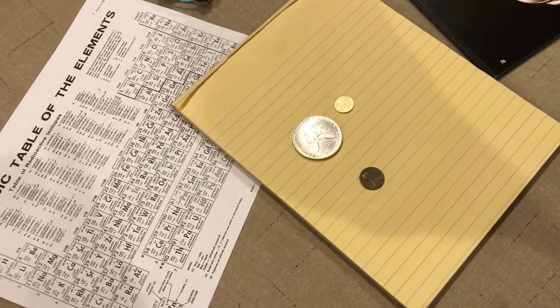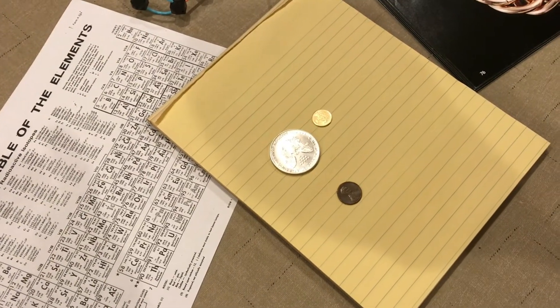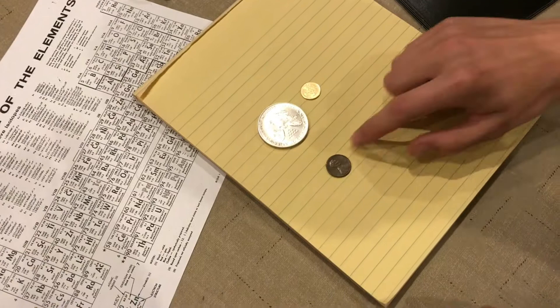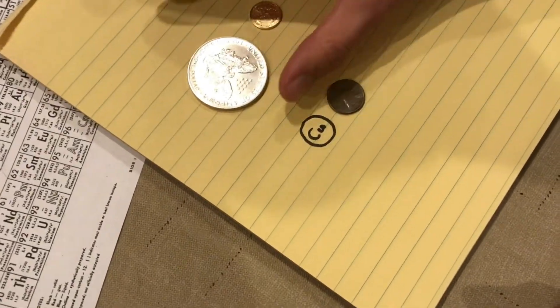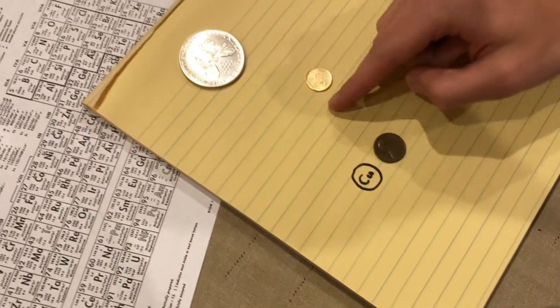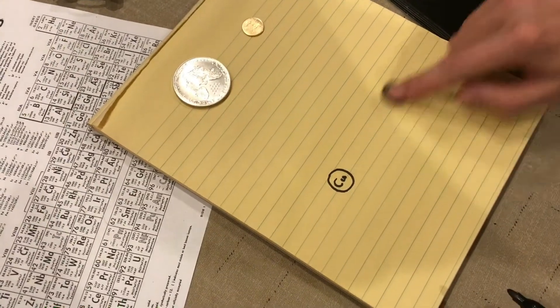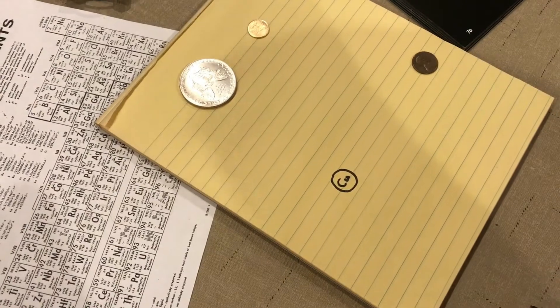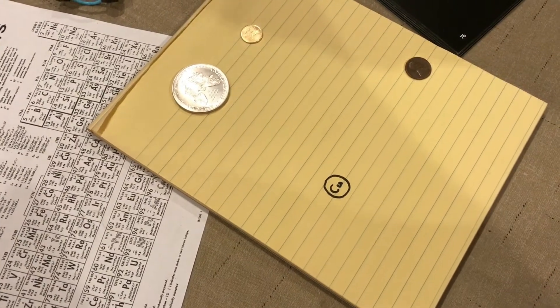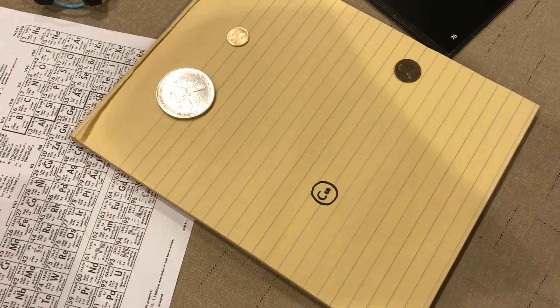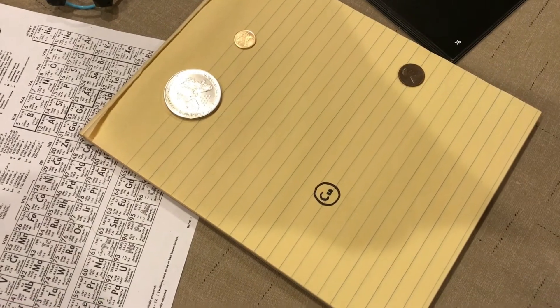So the most common and cheap conductor we have that works the best is copper. I'll move these precious metals out of the way—of course silver and gold. In order to understand why copper is a good conductor we have to look at its atomic structure.